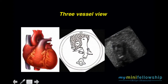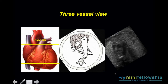What is the three-vessel view? The four-chamber view is an axial scan through the lower thorax of the fetus. You simply slide the transducer up toward the chin of the fetus until it intersects the great vessels. At that point, you will see the great vessels lined up from posterior to anterior: SVC, ascending aorta, and the pulmonary artery.